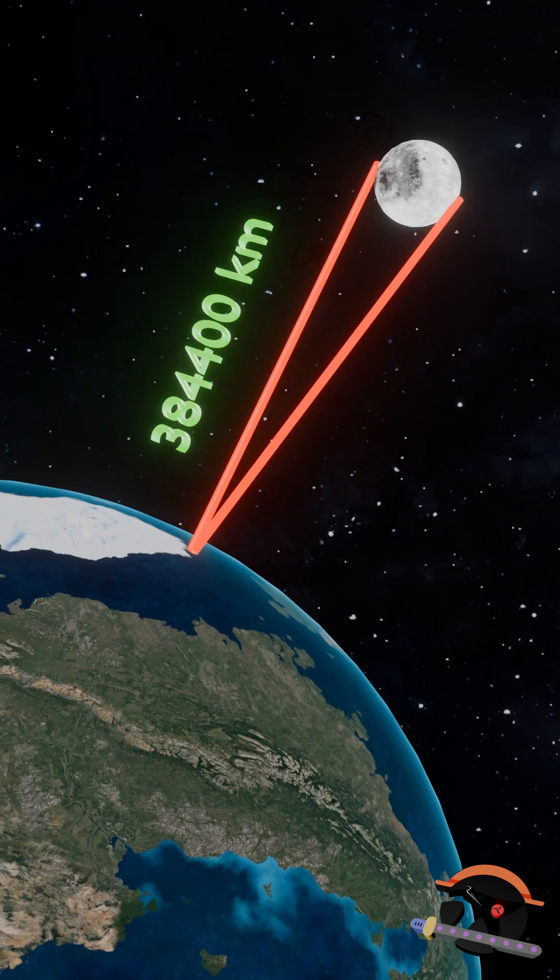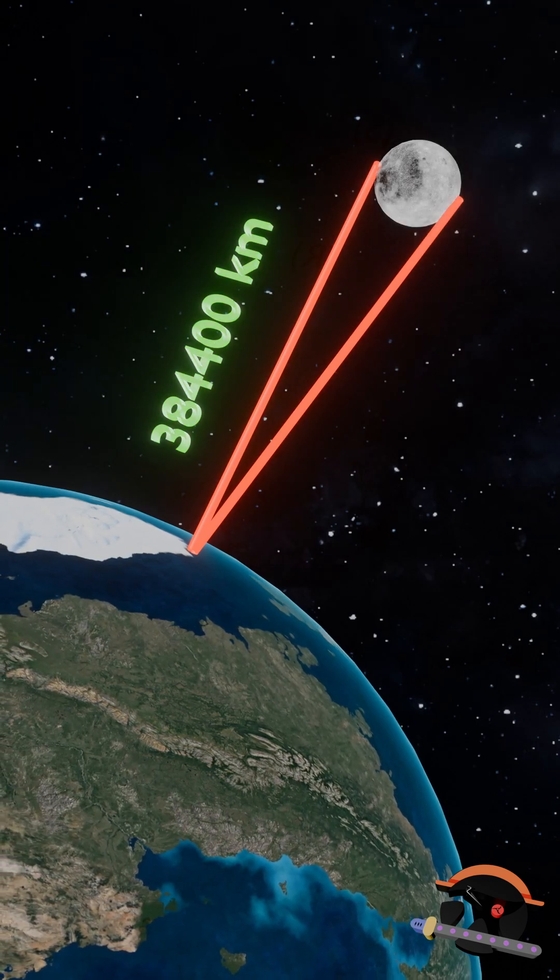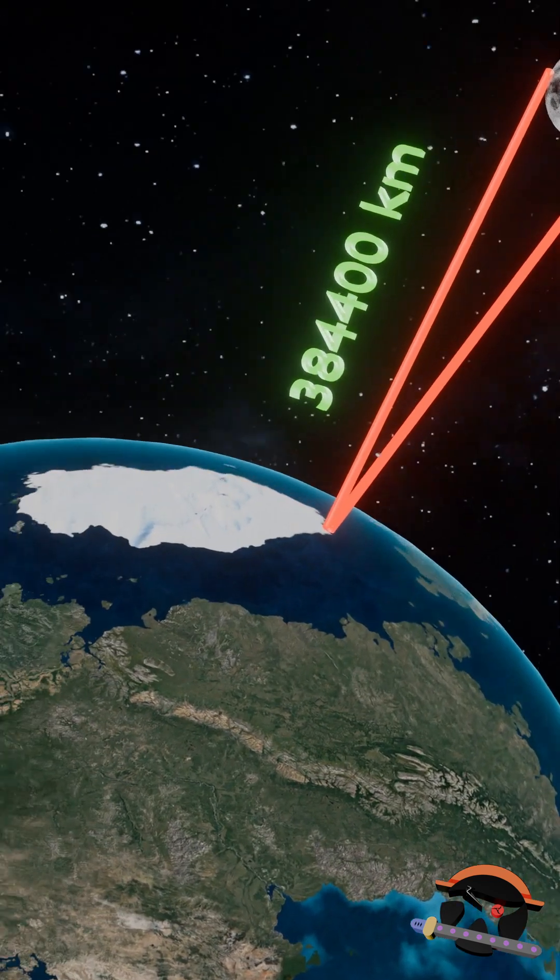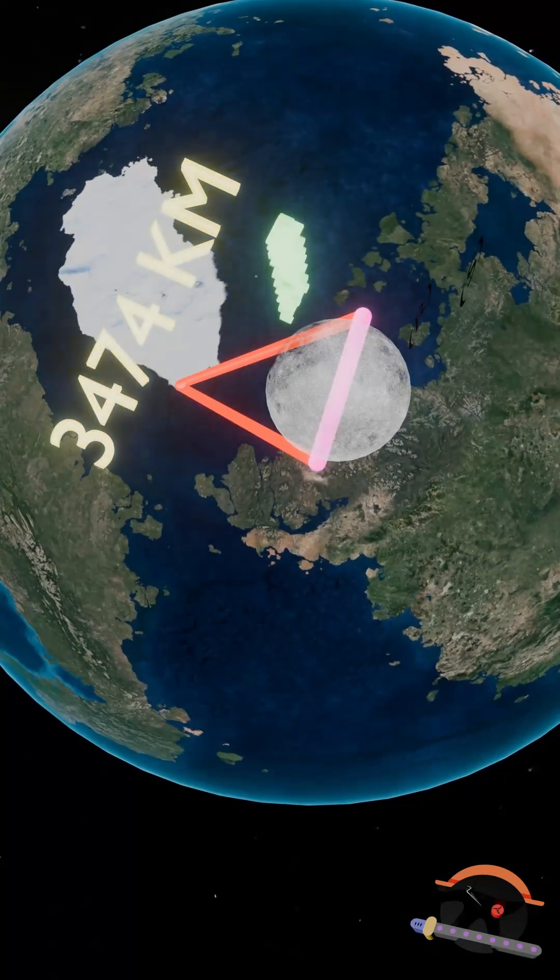Now, consider the distance of the moon from the earth, which for every location on earth is roughly 384,400 km and the diameter of the moon is around 3,474 km.